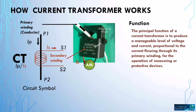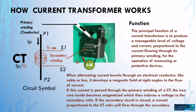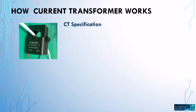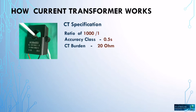When alternating current travels through an electrical conductor like a cable or bus, it develops a magnetic field at right angle to the flow of current. If this current is passed through the primary winding of a CT, the iron core inside becomes magnetized, which then induces a voltage in the secondary coil. If the secondary circuit is closed, a current proportional to the CT ratio will flow through the secondary winding.